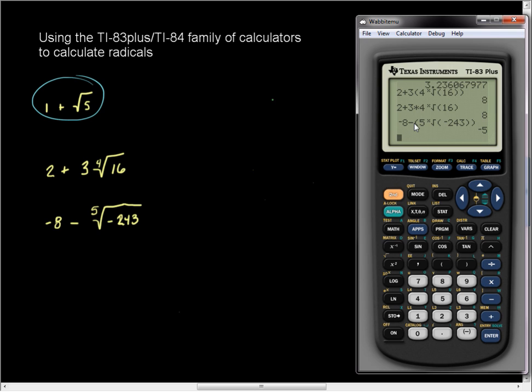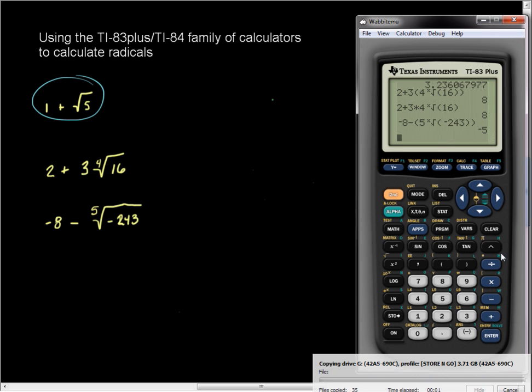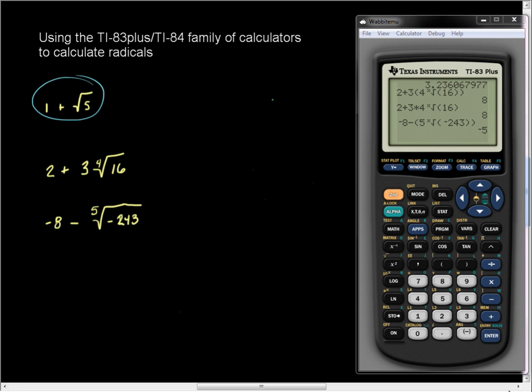So I'm going to do it a second time, and let's see if the parentheses really matter. And so we get negative 8 minus 5, math, option number 5, and in parentheses, negative 243, and press enter...